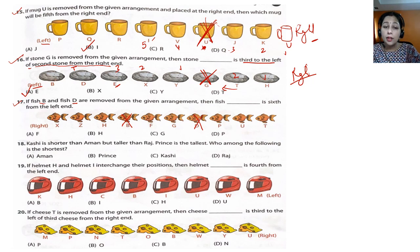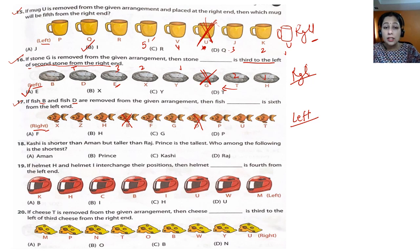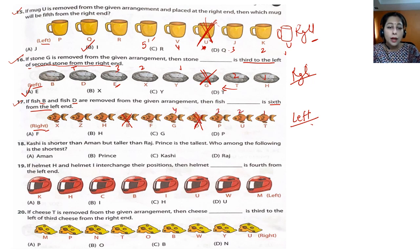Question 17: if fish B and D are removed, then which fish is sixth from the left end? They've written this is the right end, so this is your left. Always read the question carefully — if they mention right, take it as right; don't assume. Sixth from the left: one, two, three — skip removed items — four, five, six — the answer is fish H, option B.